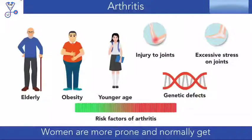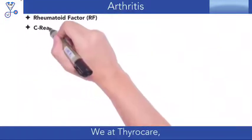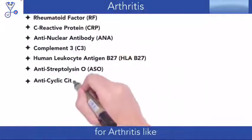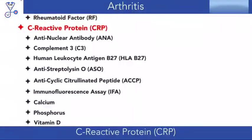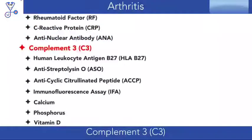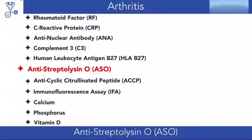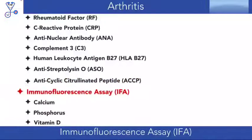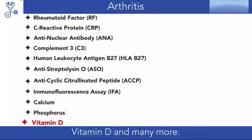Women are more prone and normally get affected at a younger age. We at Thyrocare have a wide range of testing parameters to screen for arthritis, including rheumatoid factor, C-reactive protein, anti-nuclear antibody, complement 3, human leukocyte antigen B27, anti-streptolysin O, anti-cyclic citrullinated peptide, immunofluorescence assay, calcium, phosphorus, vitamin D, and many more.